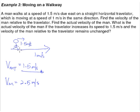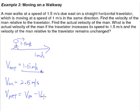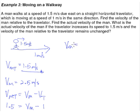But now he is moving on the travelator, which is also moving at a speed of 1 meter per second. So the man is actually traveling forward at an additional speed of 1 meter per second from the travelator. Using the formula, the velocity of the man relative to the travelator is 1.5, so the actual velocity of the man equals 1.5 plus 1, which gives us 2.5 meters per second.